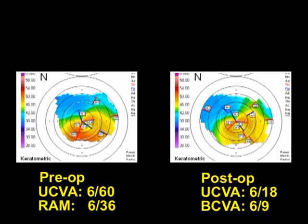Of course, progressive flattening caused by the cross-linking over the next few months will lead to further regularization of the topography. But even by the sixth post-operative day, you can definitely see an improvement in the keratometric map with an upward shifting of the cone and a decrease in the keratometric values.